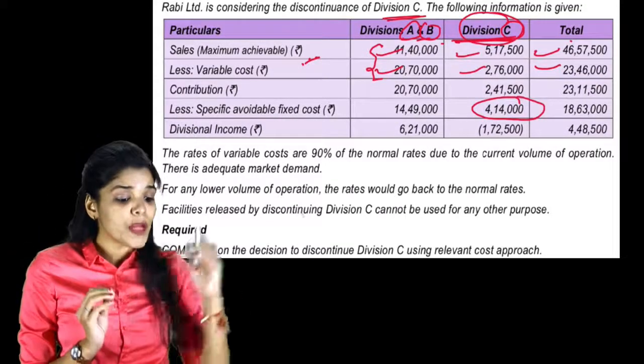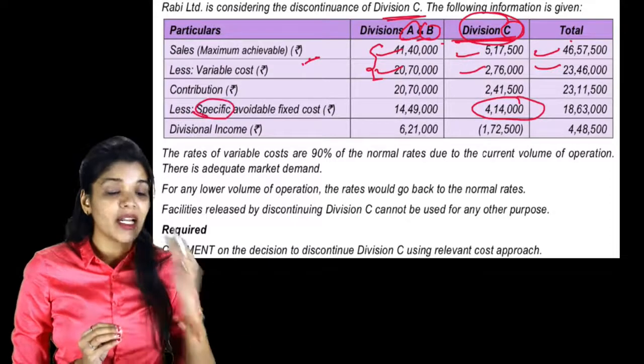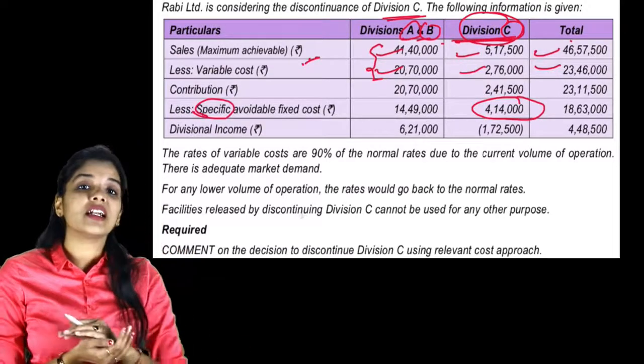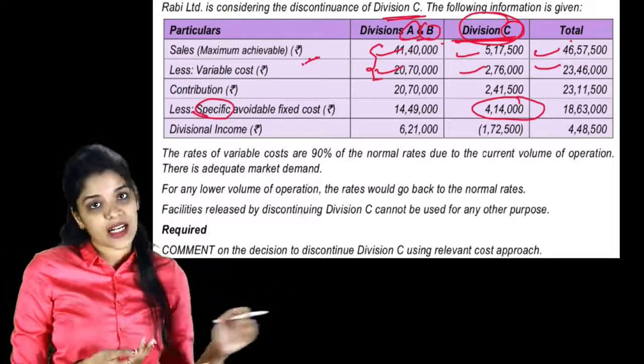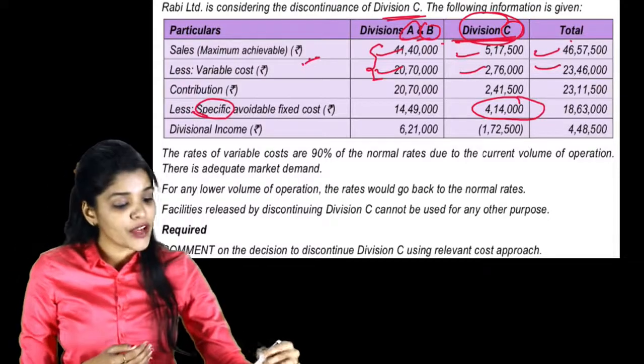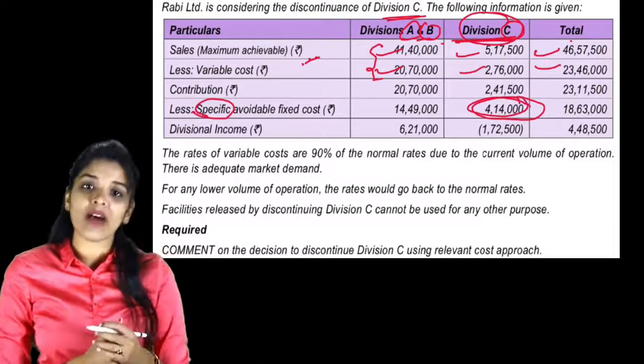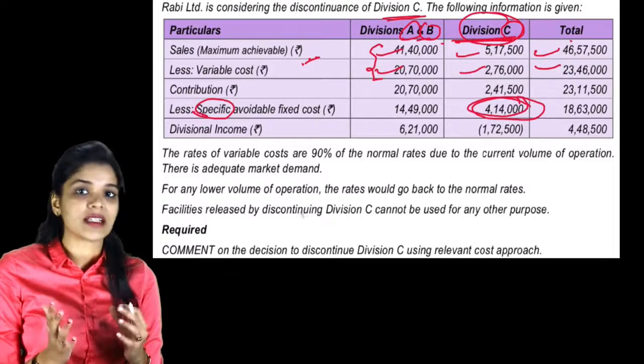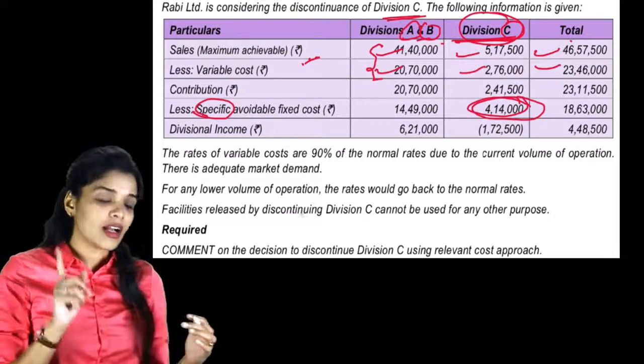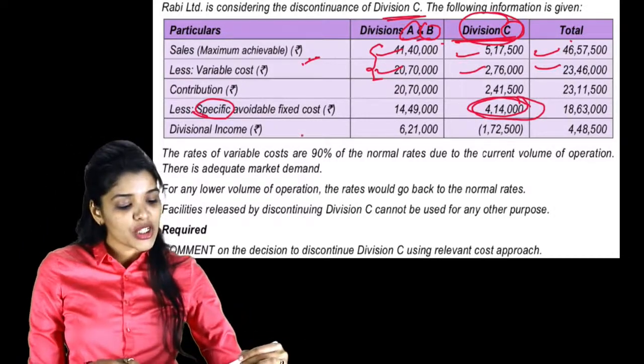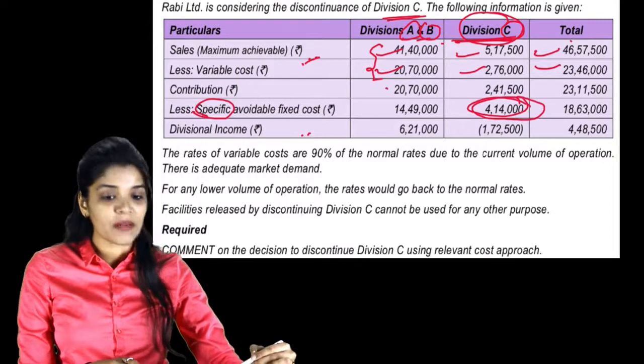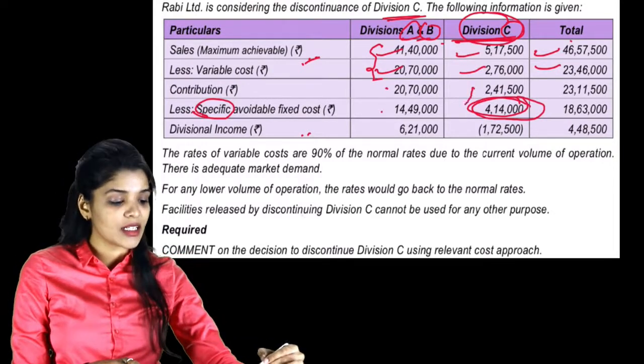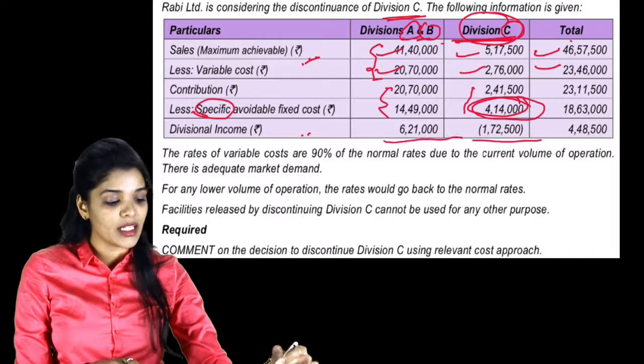If fixed cost is not specific, then even if Division C discontinues, that fixed cost would still be incurred. But this is specific to that division, meaning this fixed cost - if Division C discontinues, it will stop being incurred. Divisional income - contribution minus specific fixed cost equals divisional income.